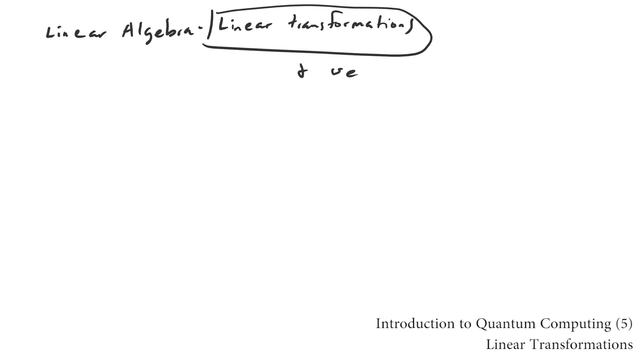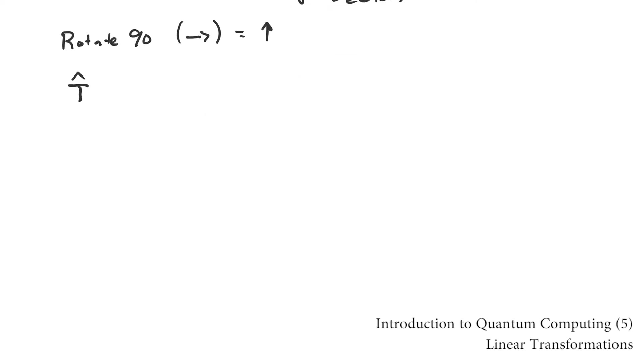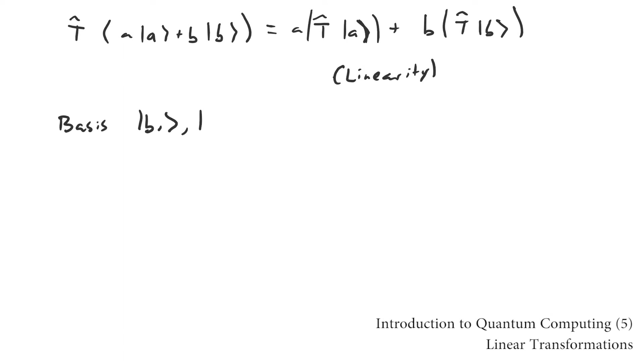A linear transformation turns one vector into another. Linear transformations are denoted by capital letters with hats. They're called linear because when they act on a linear combination, it's as if they acted on each piece of that linear combination individually. Because of this, they can be defined by how they transform the basis vectors of a space.